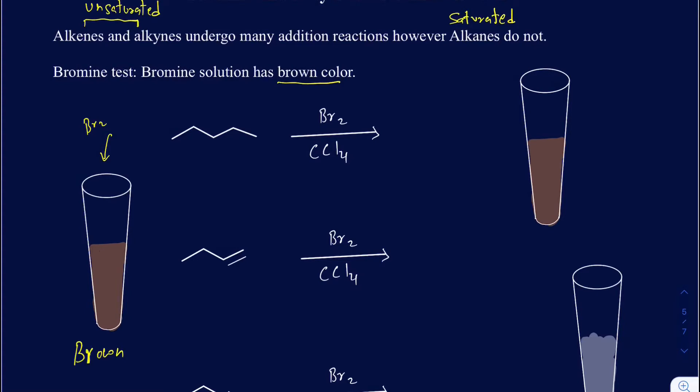If there is an alkane in the given compound, it will not react with the bromine, and as a result, your brown color will persist, and there is not going to be any reaction.